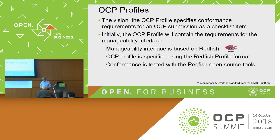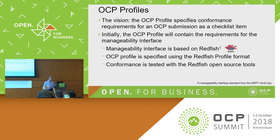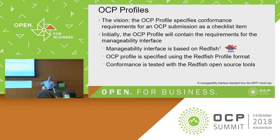My main talk is on profiles. In order to talk about profiles, I'll give you a really good idea of what they are and then why they're so important to OCP. What OCP profiles do is they specify the requirements of what an implementation of an OCP management interface needs to support. The vision is that from this OCP profile, which you write in JSON, you can actually run a conformance test against it, send the pass/fail to OCP, and OCP will grant you an OCP accepted sticker — sometime in the future once the OCP profile gets put in place.